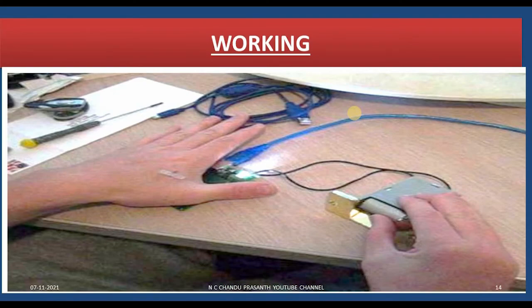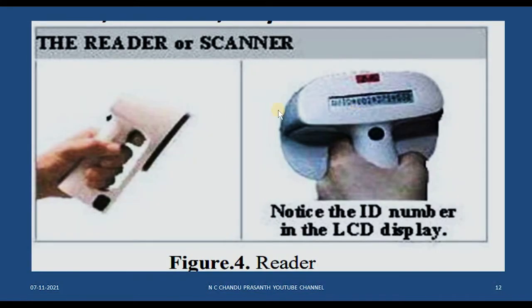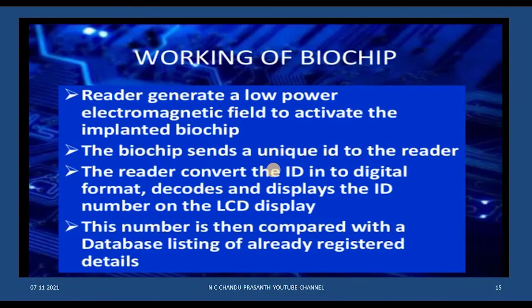For the working of a biochip: the reader generates a low power electromagnetic signal to activate the implanted biochip. Once activated, the biochip sends its ID number to the reader. The reader converts that ID into digital format, decodes it, and displays the ID number on the LCD display.